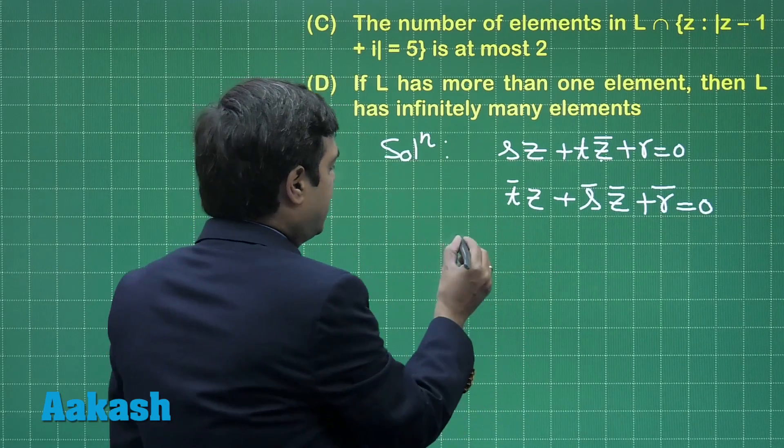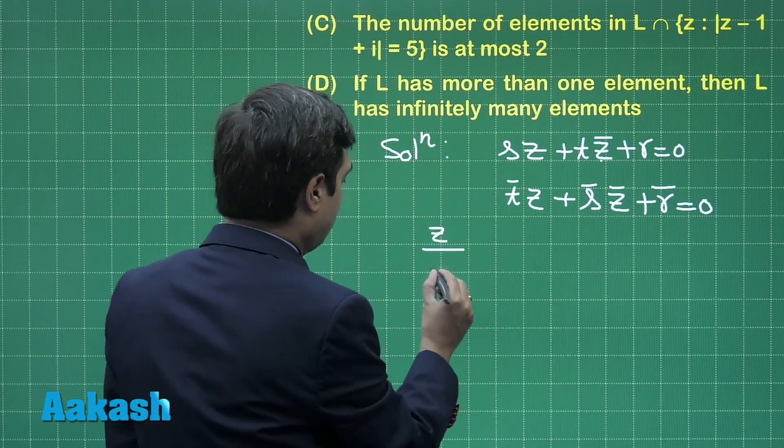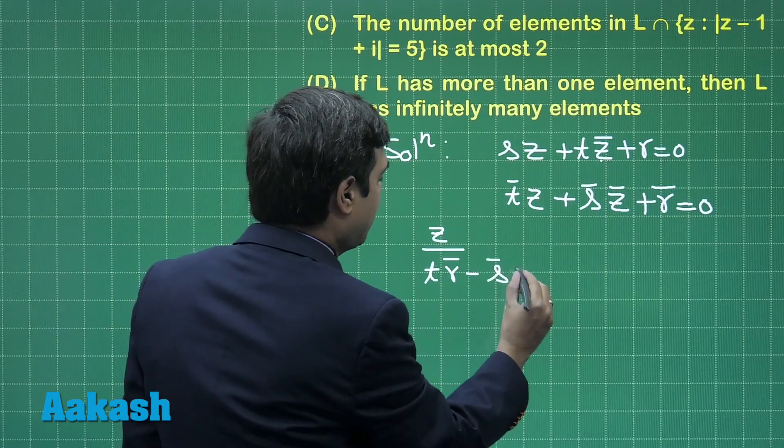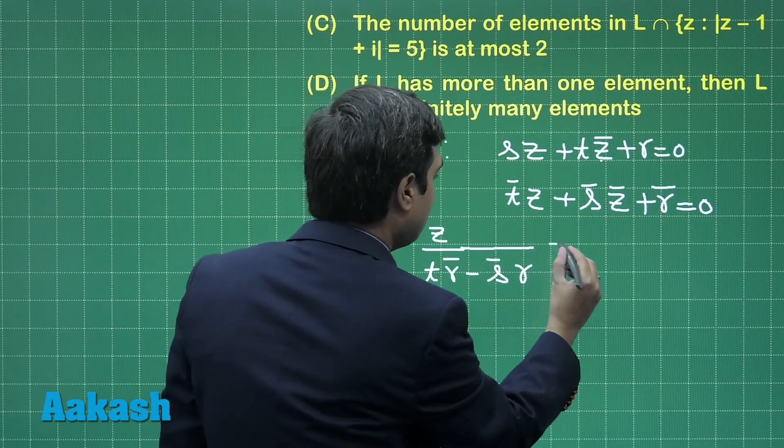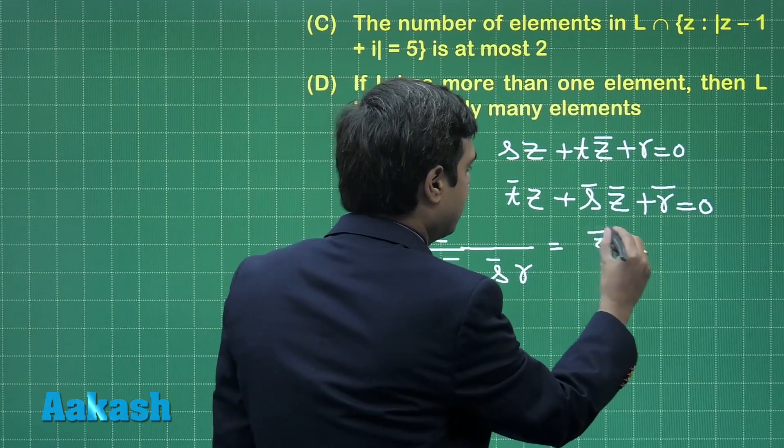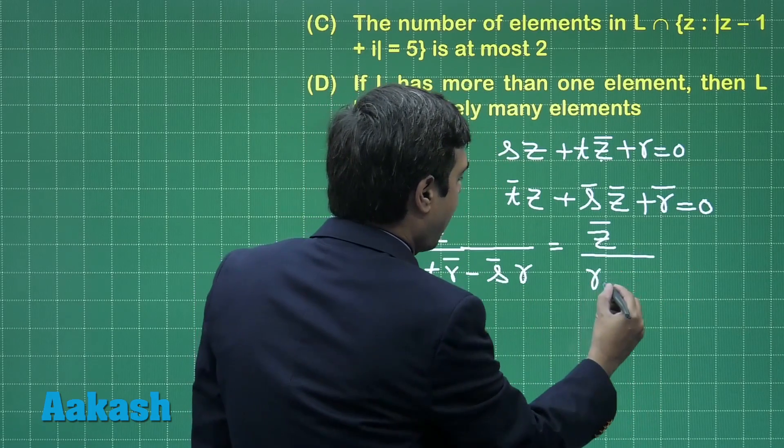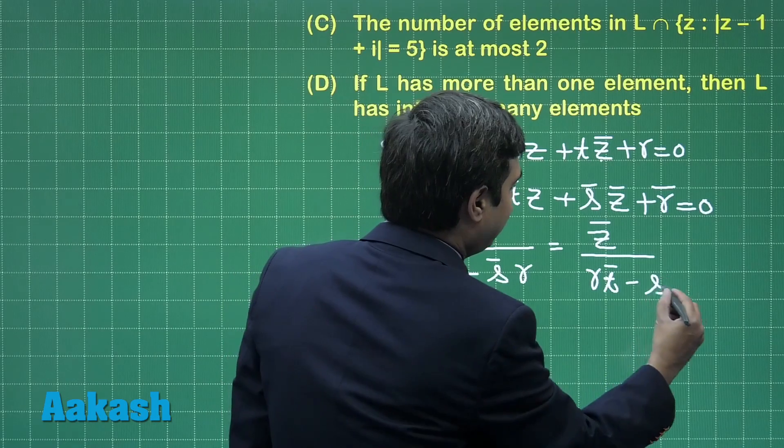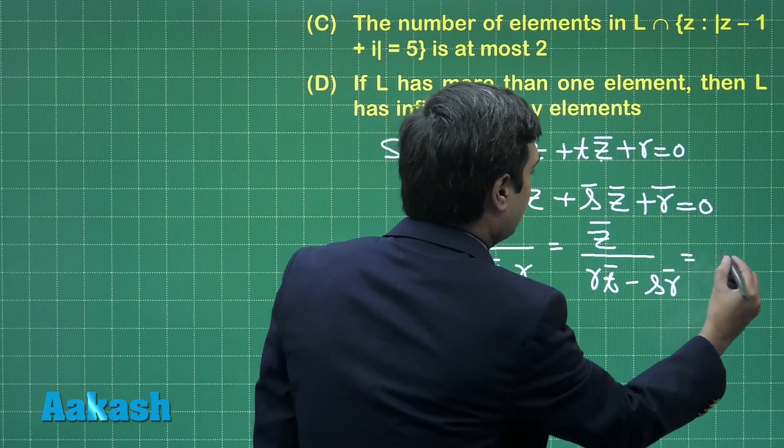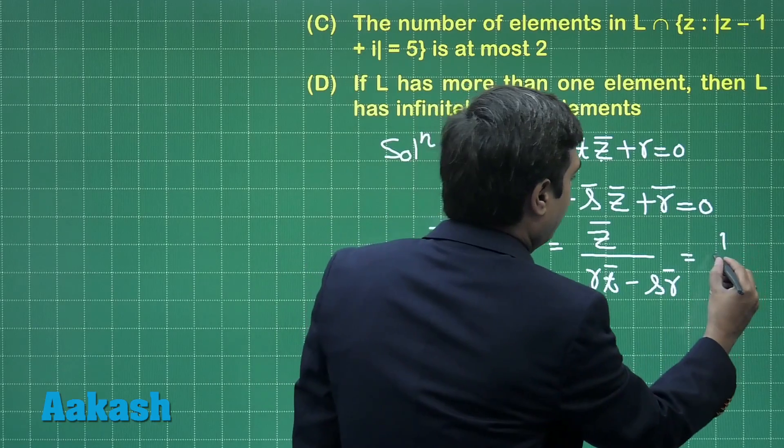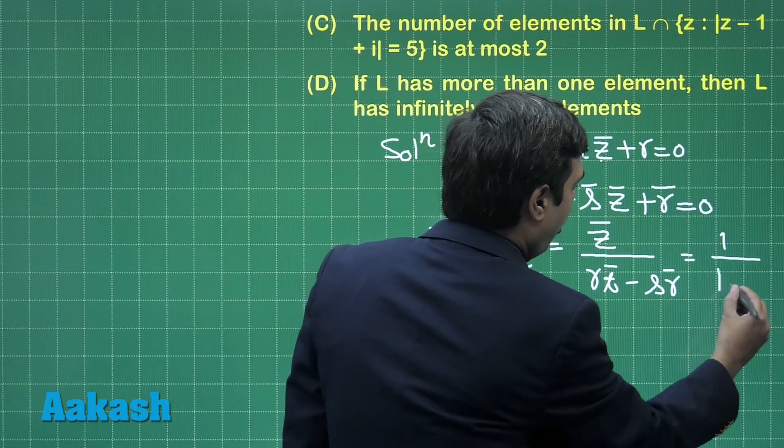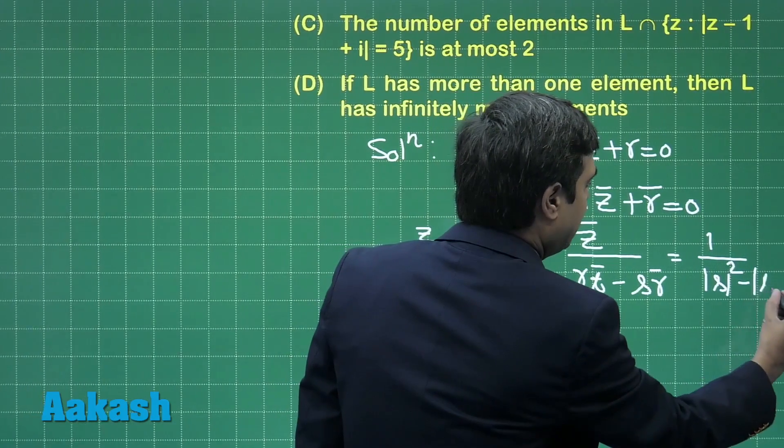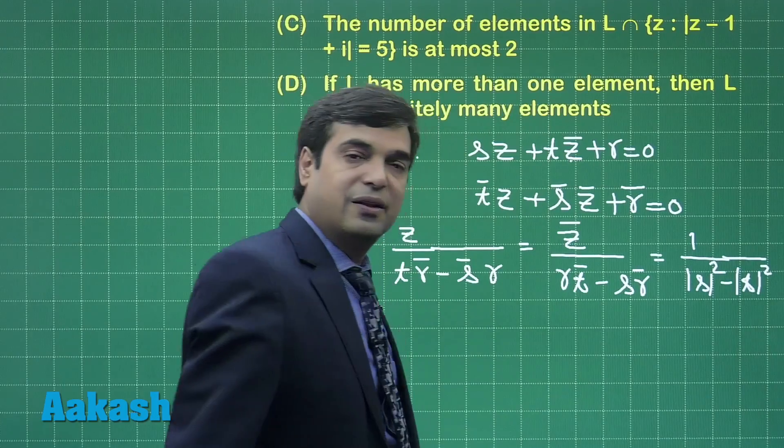Solving these two equations we get z upon Tr̄ minus S̄r equals z̄ divided by rT̄ minus Sr̄ equals 1 upon |S|² minus |T|². This is clear.